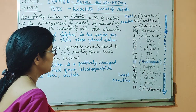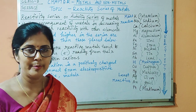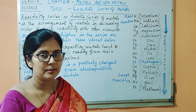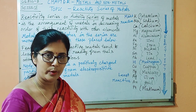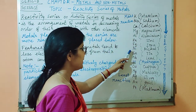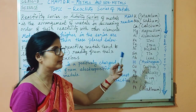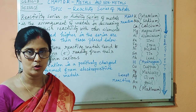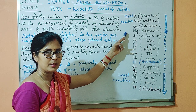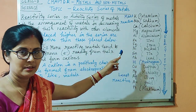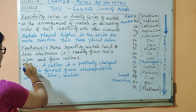Now we will look at the features. The reactivity series gives an idea or information about how metals react with other elements. It also tells us whether a metal can displace another metal in a solution, or whether a metal is able to react with acids or bases. The most reactive metals usually displace the metals which are placed below them, as metals placed higher in the series are more reactive than those placed below.